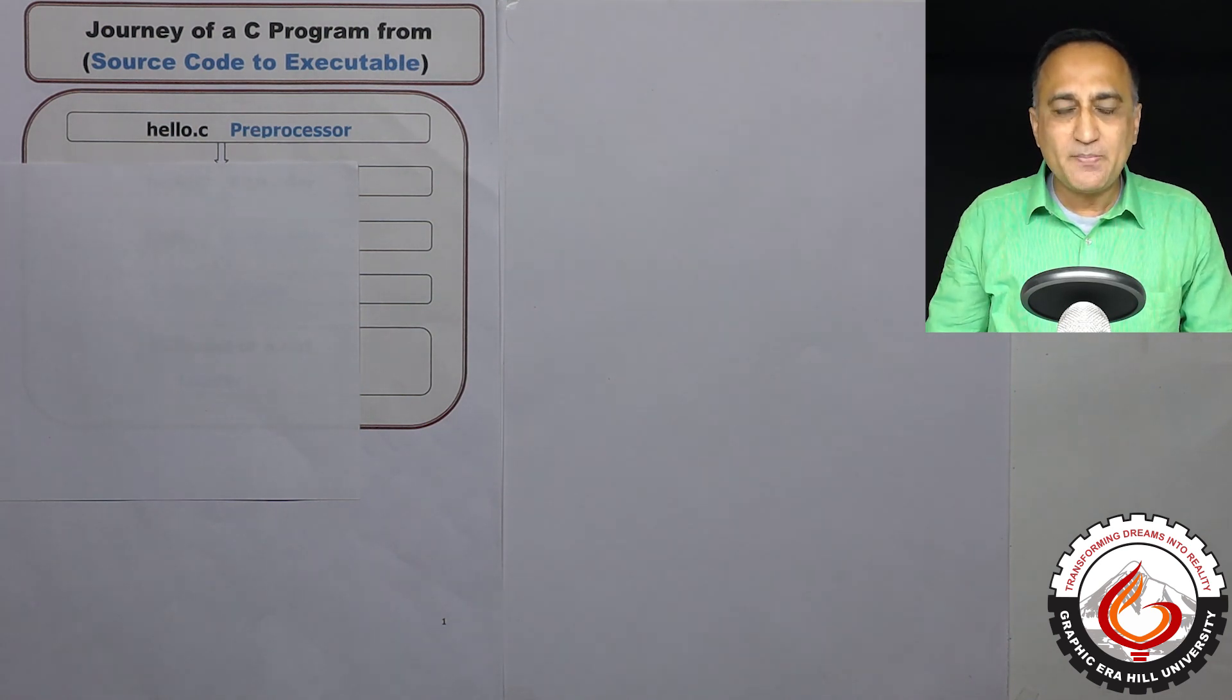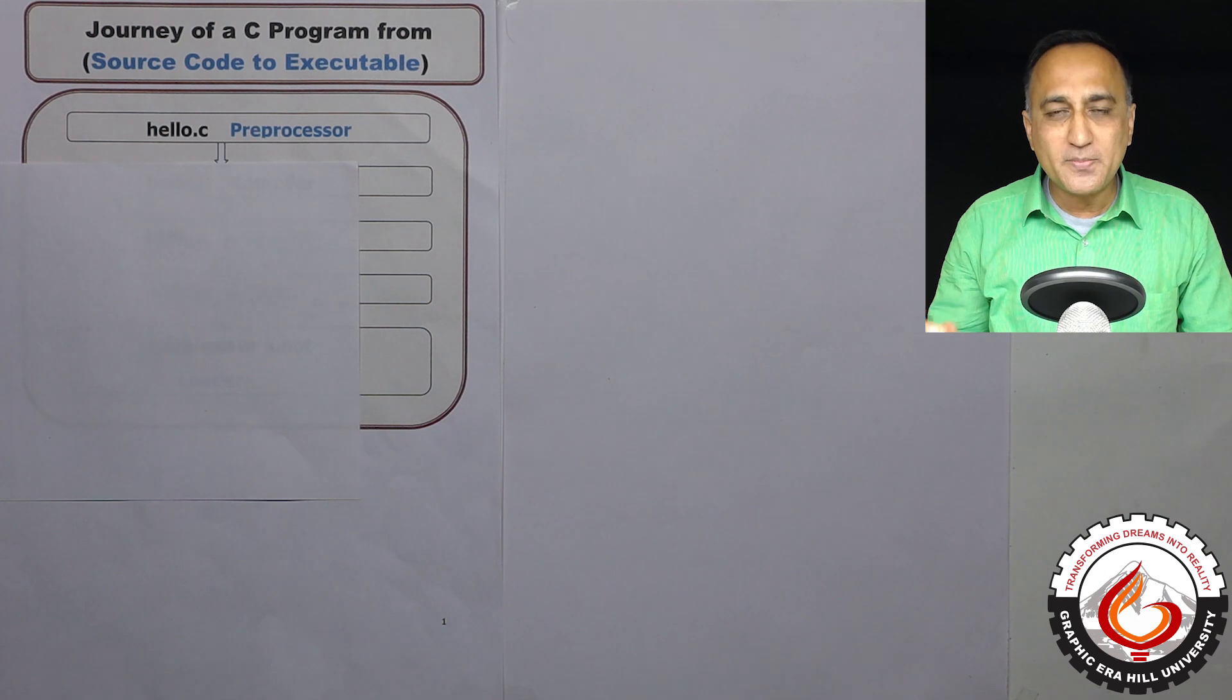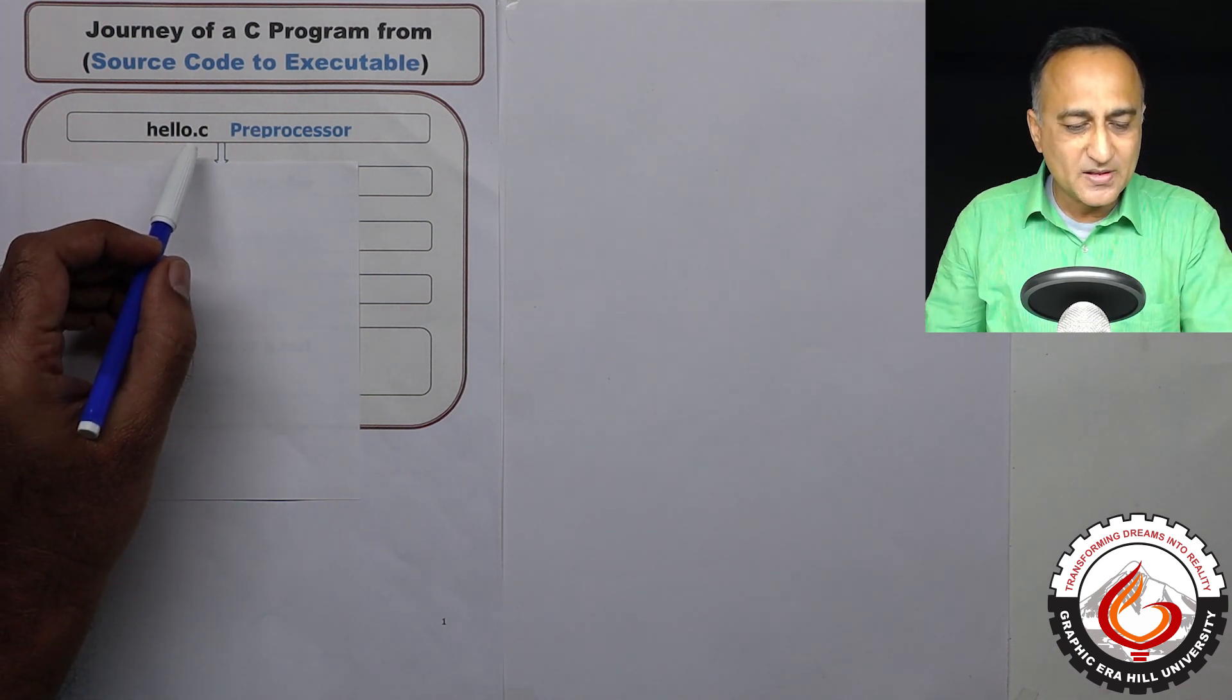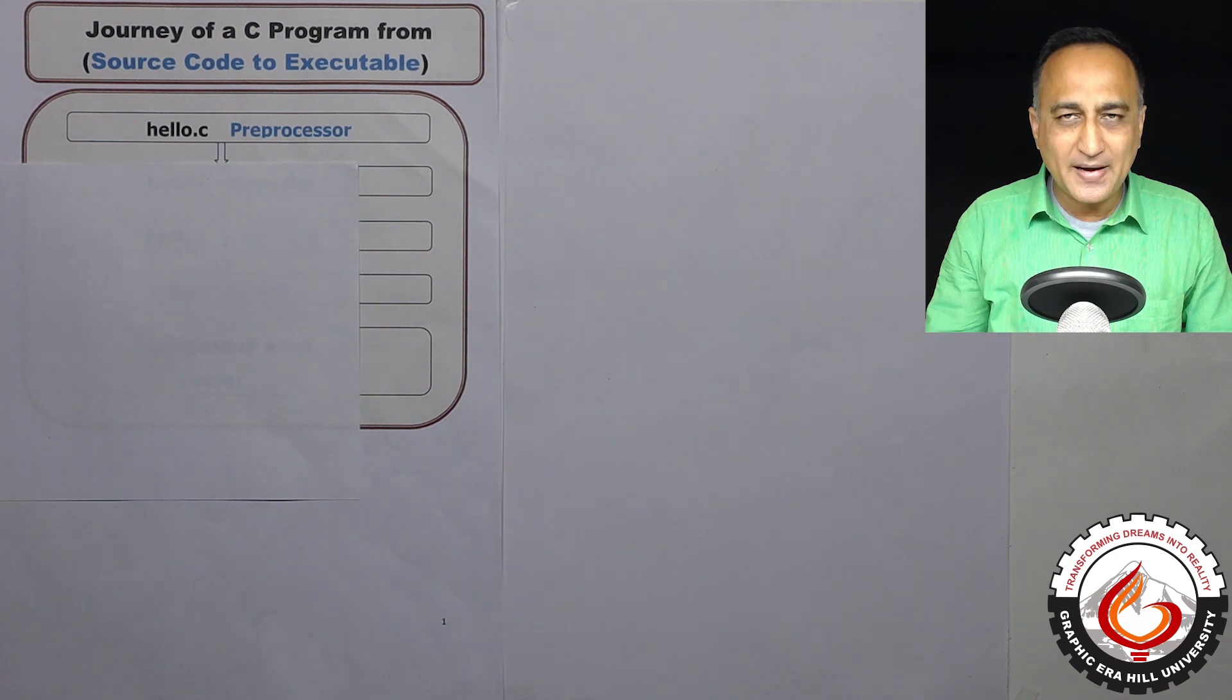In your integrated development environment, when I press the shortcut key to compile or build, there is a series of steps or transformations your code undergoes before it becomes ready for execution on your RAM or main memory. So let's say hello.c is ready for compilation. I press the build or compile key.